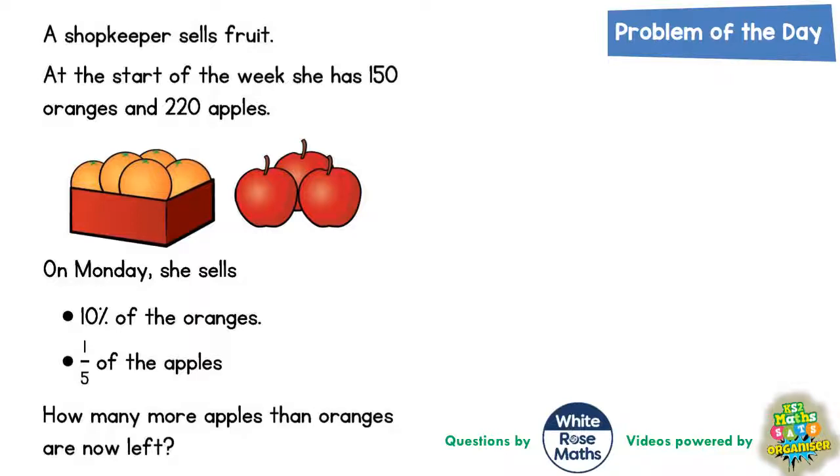A shopkeeper sells fruit. At the start of the week she has 150 oranges and 220 apples. We might as well write that next to each of the sets of fruit. So if we've got 150 oranges and 220 apples, that will help us visualize what's going on.